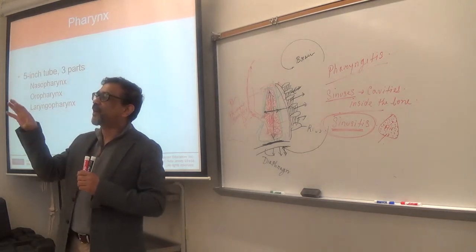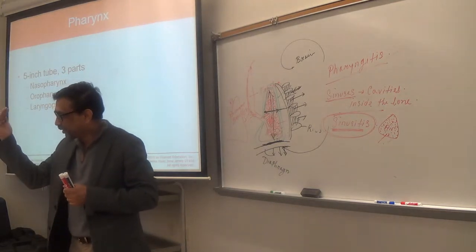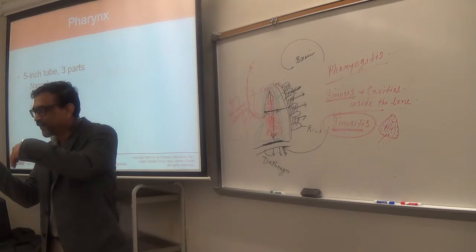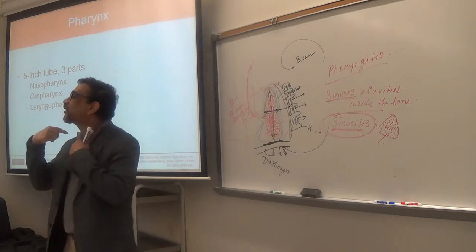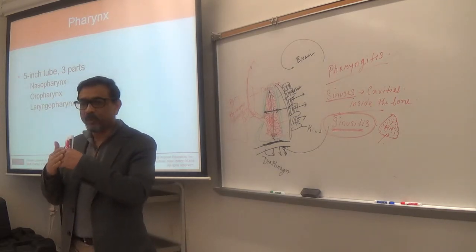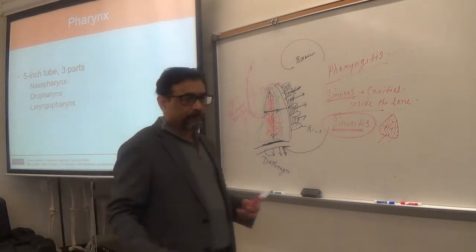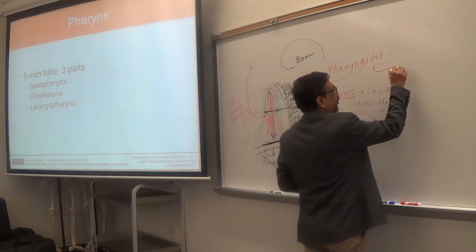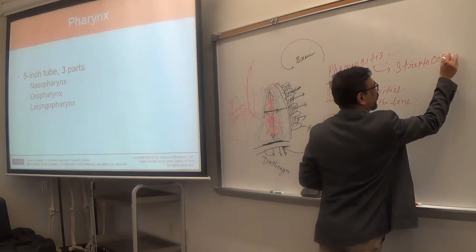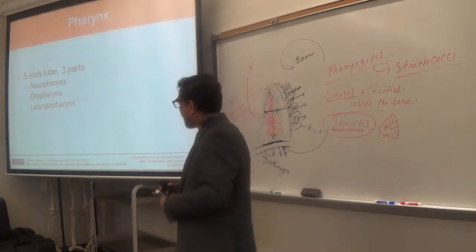You can see part of the pharynx if you ask the person to open the mouth wide and shine a light through the oral cavity. In pharyngitis, you will see redness and swelling, and the person will complain of throat pain. Pharyngitis is usually caused by streptococcal bacterial infection.